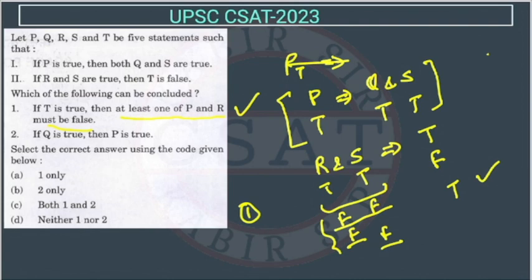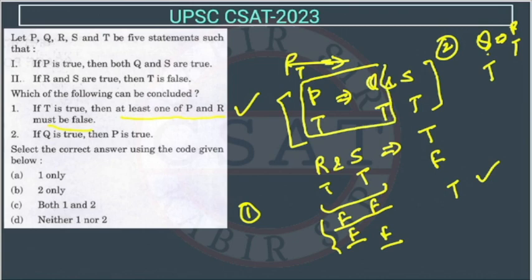Now second statement. So first statement is correct. Now second statement: Q is true, so Q is true, then P is true. If Q is true, then P is true. So we know that if P is true, Q and S both are true from this. But we cannot reverse it. If Q is true, then P is true.